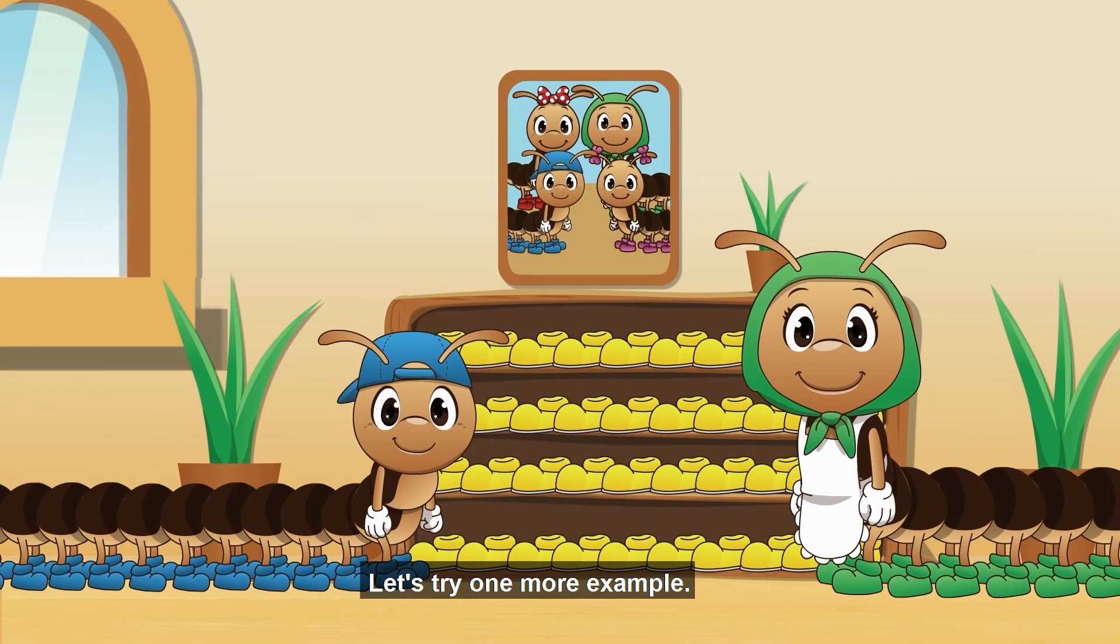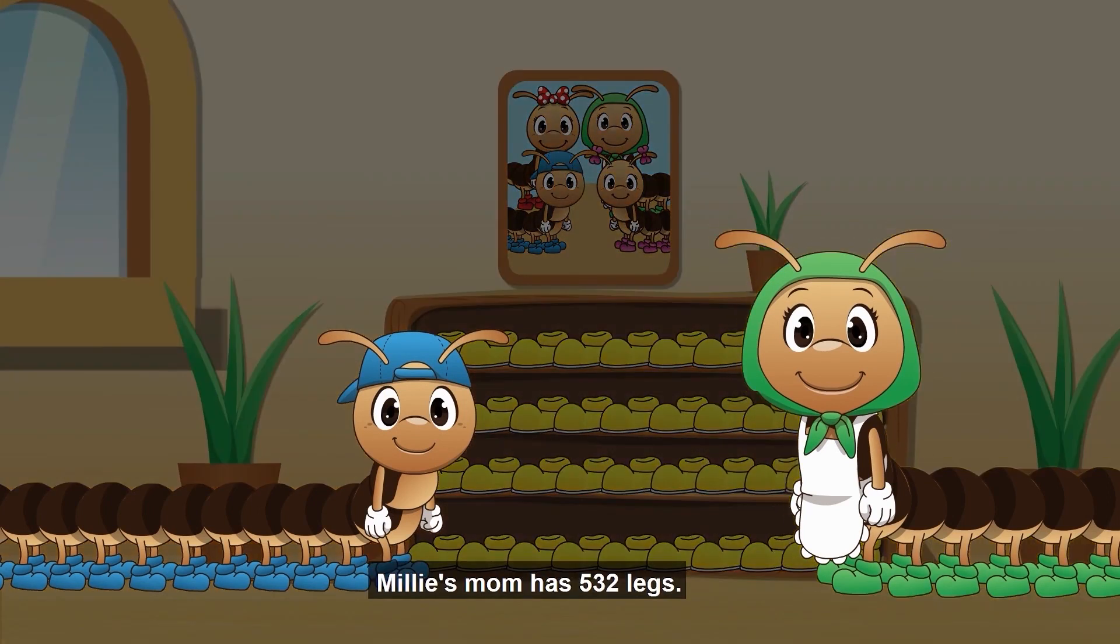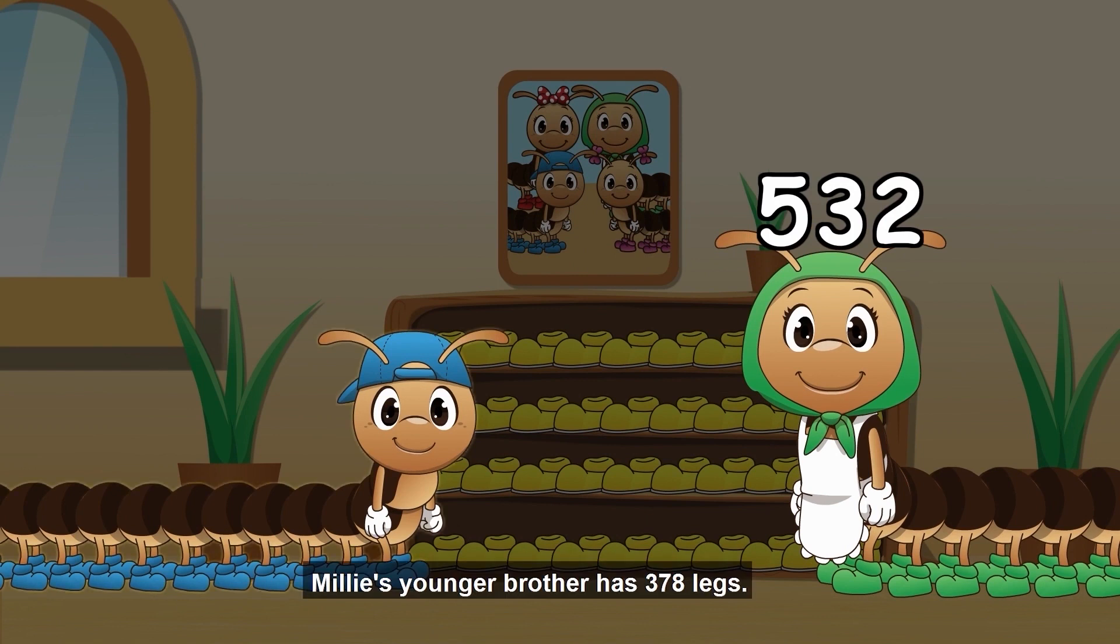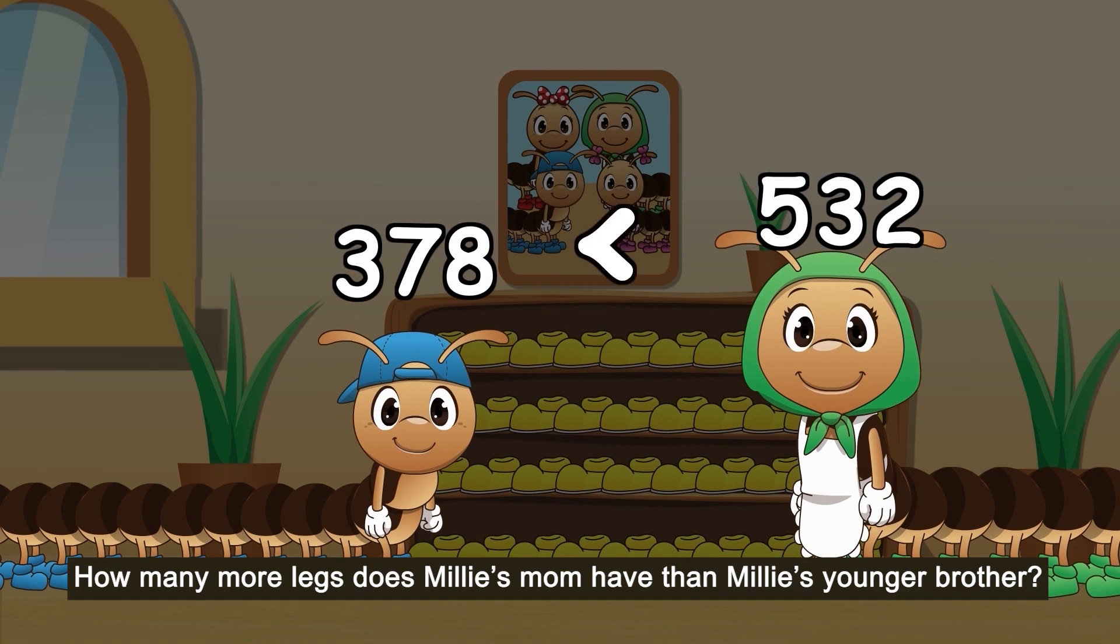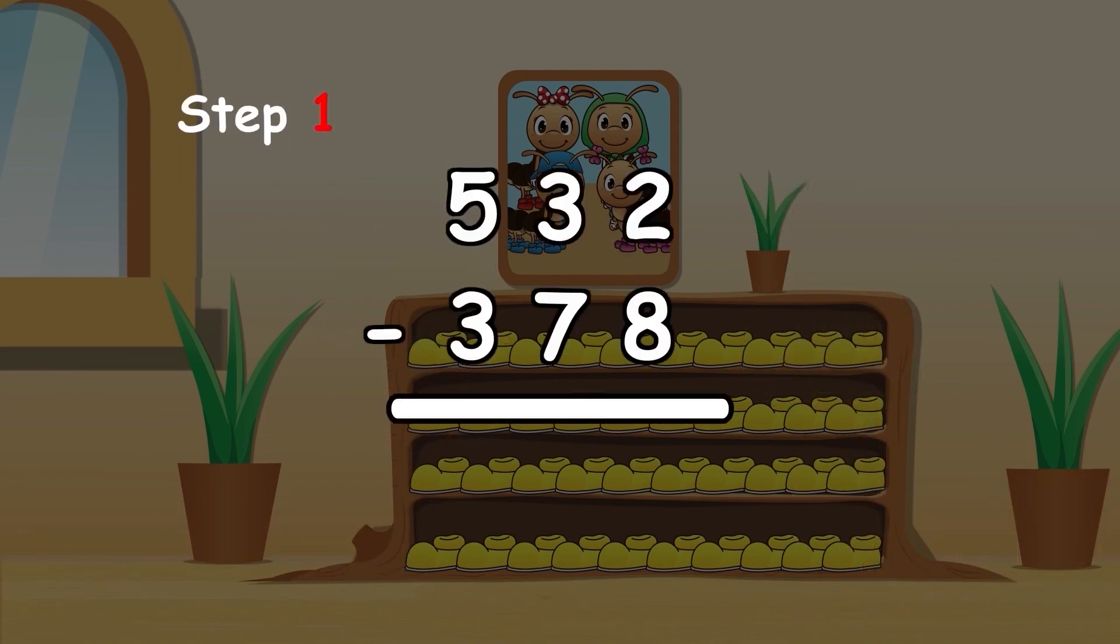Let's try one more example. Millie's mom has 532 legs. Millie's younger brother has 378 legs. How many more legs does Millie's mom have than Millie's younger brother?